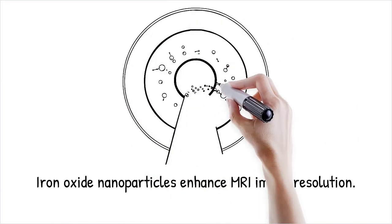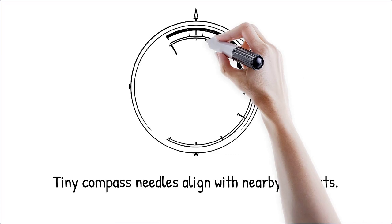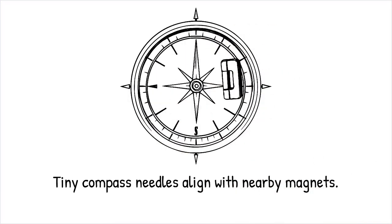Iron oxide Fe3O4 nanoparticles are used as MRI contrast agents with their superparamagnetic properties, enhancing image resolution. It's like tiny compass needles that lose their direction when shaken, but instantly align when a magnet is nearby.